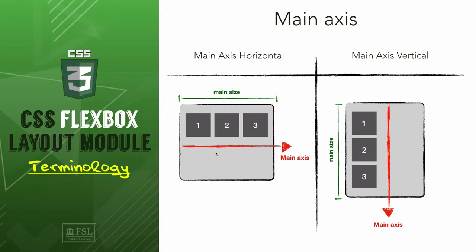If the main axis is horizontal, the start will be at the left and the end will be at the right, which ends up as left to right. And if the main axis is vertical, the start will be at the top and the end will be at the bottom.